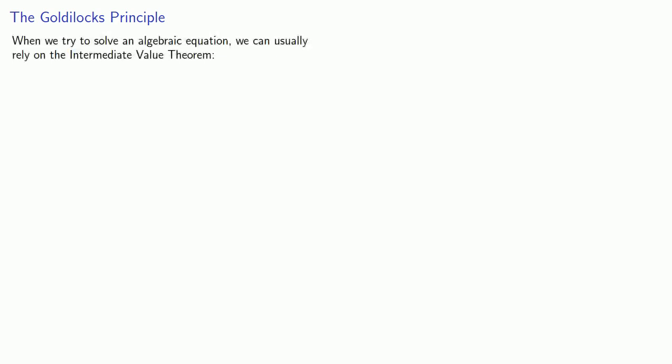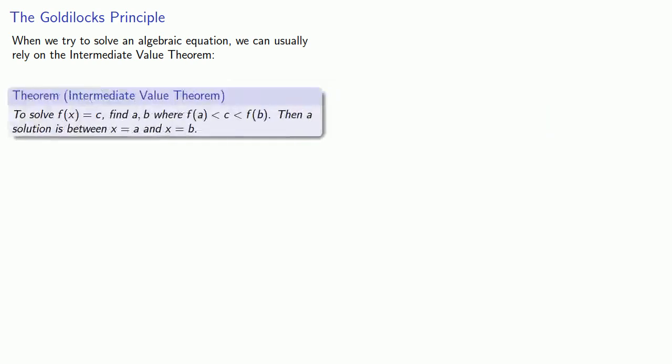When we try to solve an algebraic equation, we can usually rely on the Intermediate Value Theorem. To solve f of x equals c, find two values a and b where f of a is less than c, which is less than f of b. The Intermediate Value Theorem guarantees that there is a solution between x equals a and x equals b.